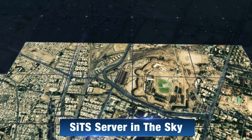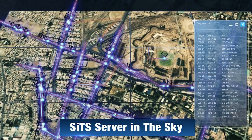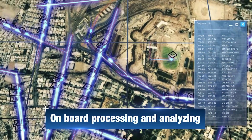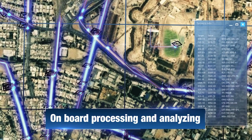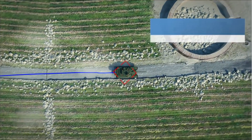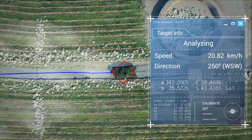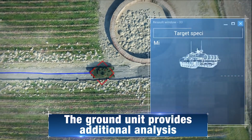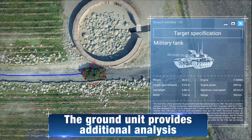The system uses SITS, Server in the Sky, combined with advanced smart algorithms which automatically map, track, and analyze each movement in the coverage area. The information is then sent to the ground unit for further analysis and precise distribution.